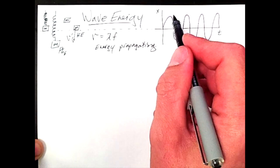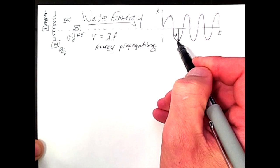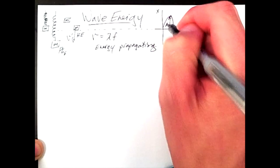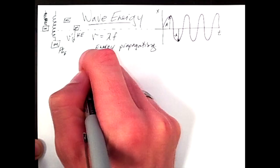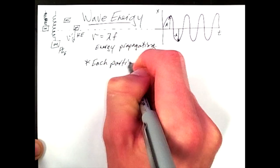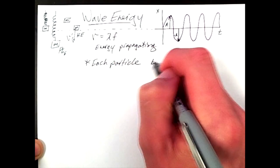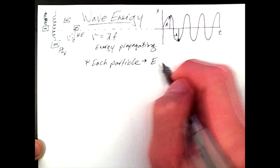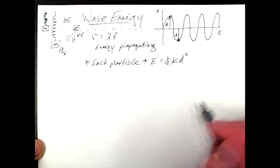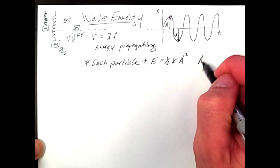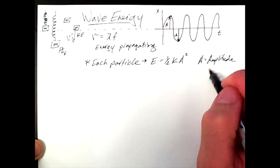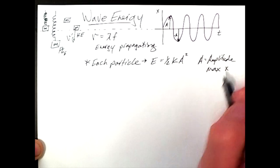So if we were to just choose a point at the extremes, either at here or here, where A is maximized, this would be positive A, this would be negative A, we could describe each particle of a wave as having an E maximum, or a total energy, of one half k A squared, where A is amplitude, which we already know is the maximum displacement, or the maximum x value.